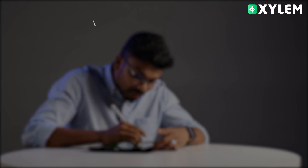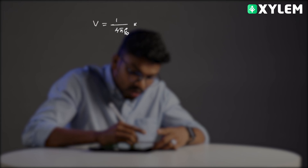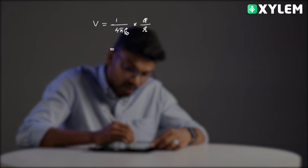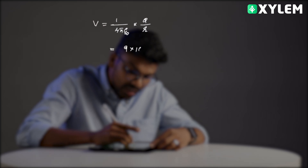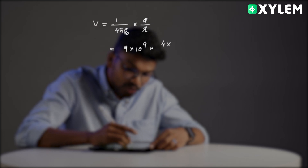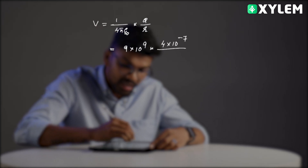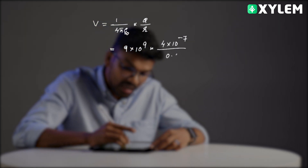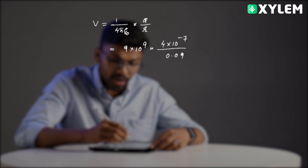The potential equation we use is V = (1/4πε₀) × (Q/R). The value of 1/4πε₀ is 9×10⁹. So V = 9×10⁹ × Q/R, where Q = 4×10⁻⁷ and the distance R = 9 cm = 0.09 m.